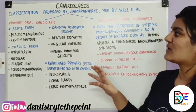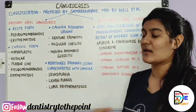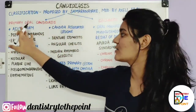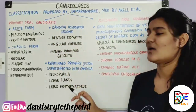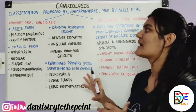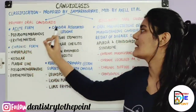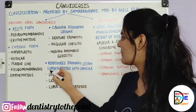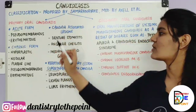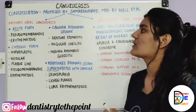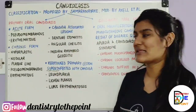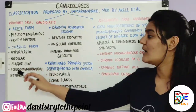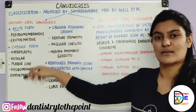A mnemonic to remember the four primary forms is: 'acute, chronic, Candida, super' — representing acute, chronic, Candida-associated, and superinfected lesions. In the acute form you have pseudomembranous and erythematous types. In the chronic form you have hyperplastic, nodular, and plaque-like — these three are new additions. Pseudomembranous and erythematous types are repeated in both the acute and chronic forms.